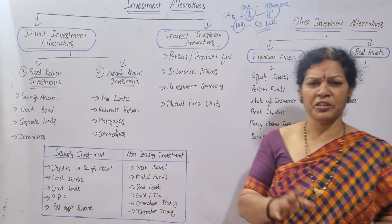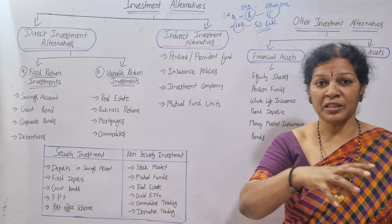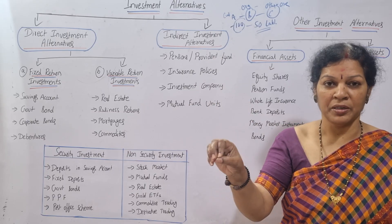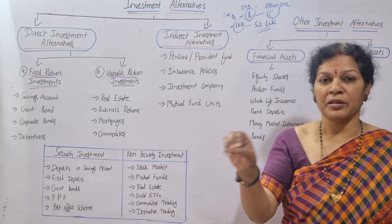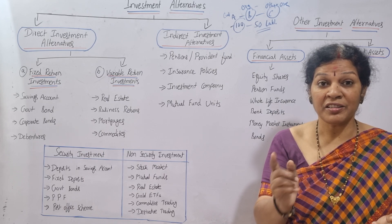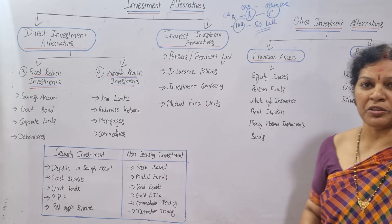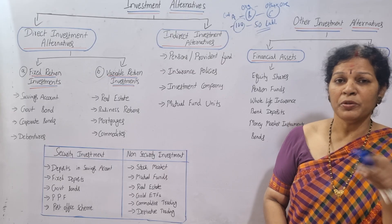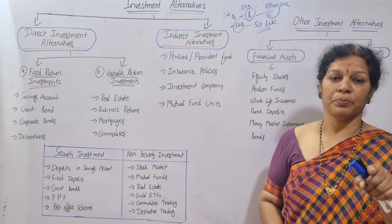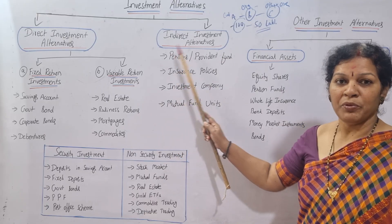Investment companies are also a form of indirect investment. For example, a company takes deposits from all investors and utilizes that amount in other areas — sometimes real estate, electrical companies, construction, textiles, cement, and different sectors. These are called investment companies. Similarly, mutual funds — the money you invest in mutual funds is utilized by the mutual fund company in other areas. These are the ways of investing indirectly.